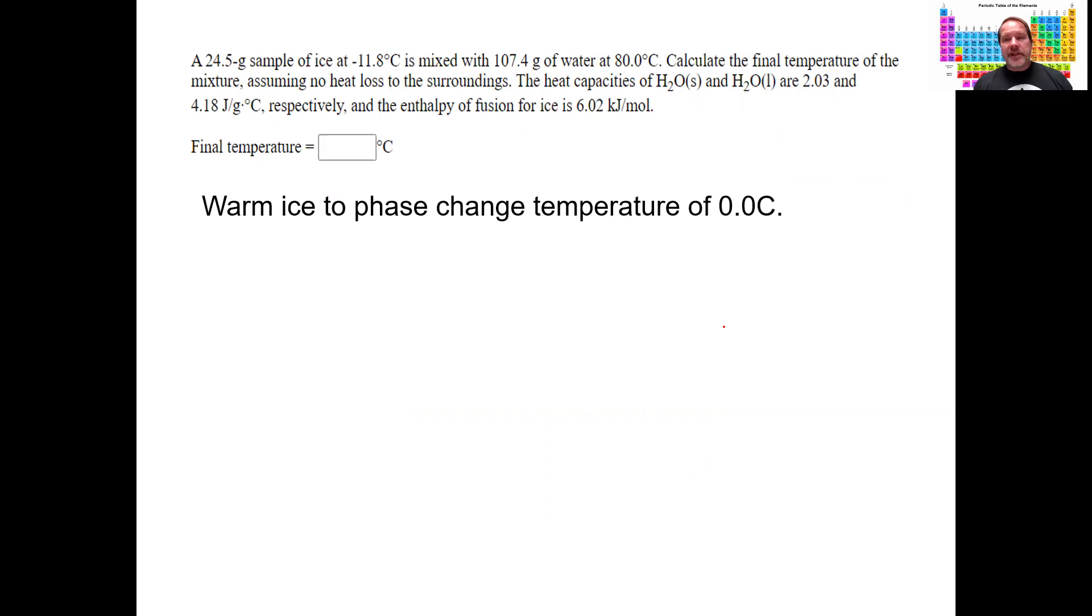First of all, we have to think about how much energy it takes to warm up the ice to the phase change temperature of 0°C, and then how much energy to get through the phase change. Let's do the first part. To heat it up requires a temperature change. We use what I call the MCAT formula, and the ΔT in this is going to take it up to zero from -11.8°C. That's my T_final minus T_initial, as you can see.